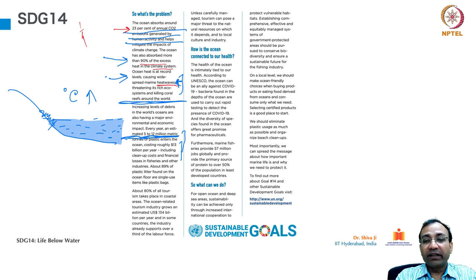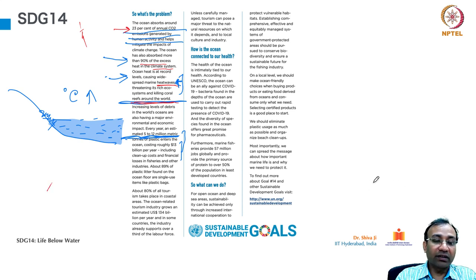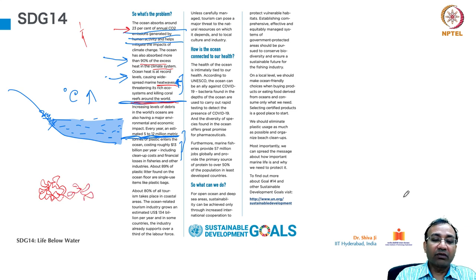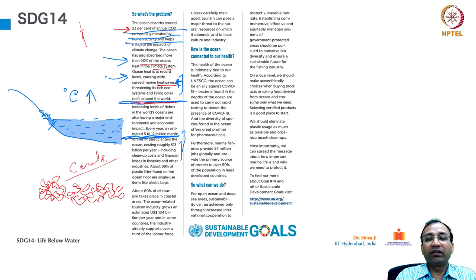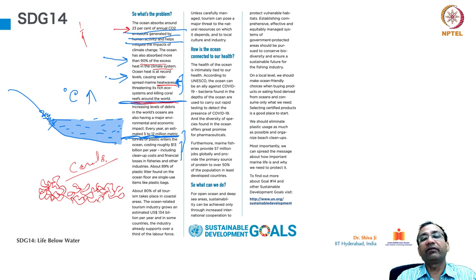One of the major impacts is the loss of coral reefs. Corals are organic living beings which usually occur in ocean sea beds. They form huge colonies — the largest coral reef exists in the Great Barrier Reef of Australia, next to the Australian coast. There are several other reefs present around the world.